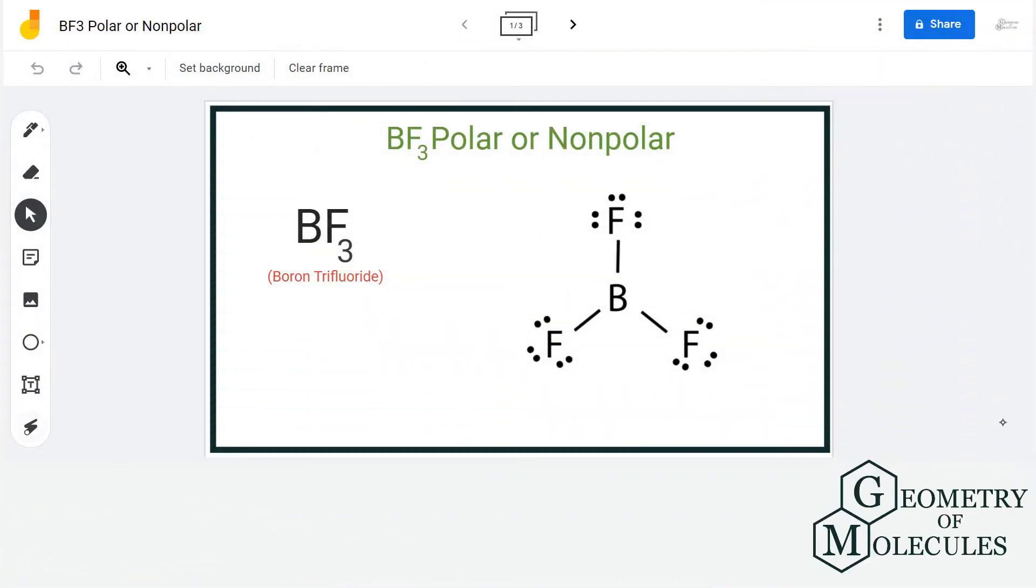Hi guys, in this video we are going to determine the polarity of BF3 molecule. It's the chemical formula for boron trifluoride and it is made up of one boron atom and three fluorine atoms. To understand its polarity, we will first look at its Lewis structure.